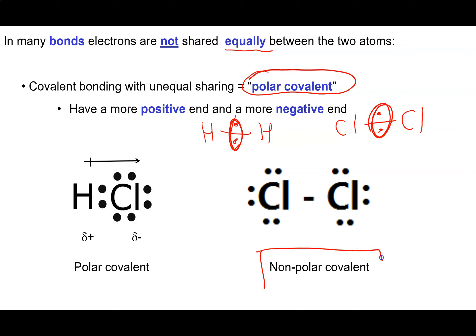When this occurs, whether it's in hydrogen or whether it's in chlorine, this is referred to as a non-polar covalent bond.